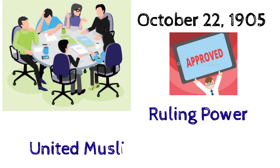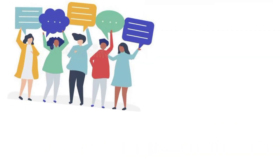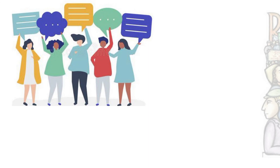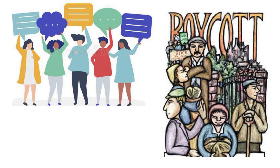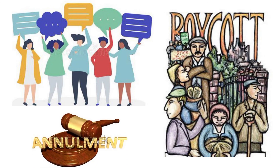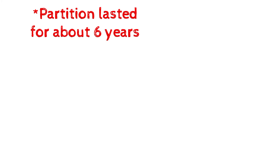They formed an association to voice their own views related to social and political matters. Due to the intense protest, as well as the Swadeshi and boycott movements, the government annulled their decision on 12 December 1911. This partition lasted only about six years, but the result of it proved a thorn in the flesh to the government.